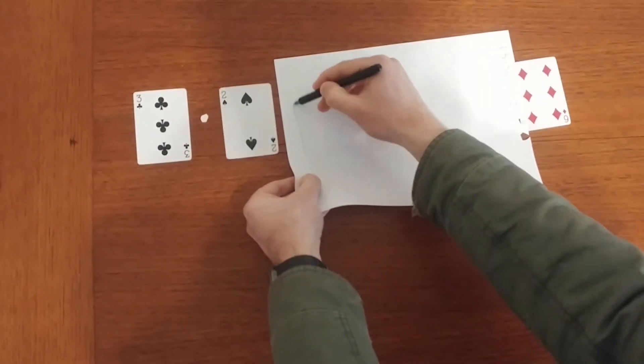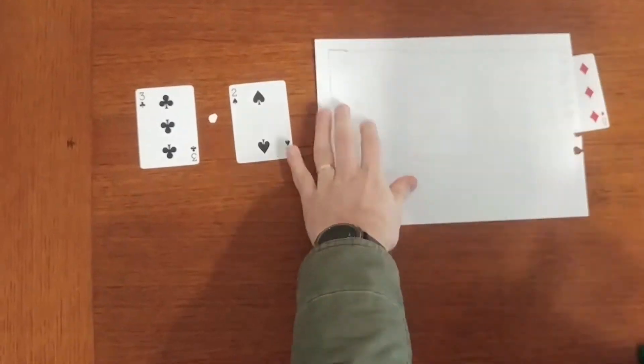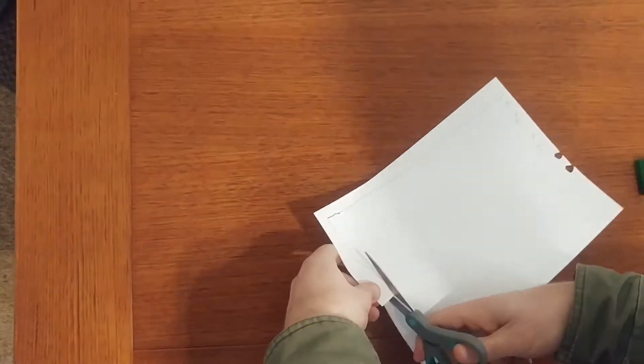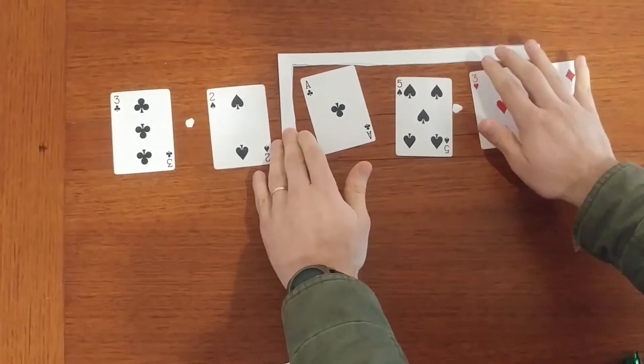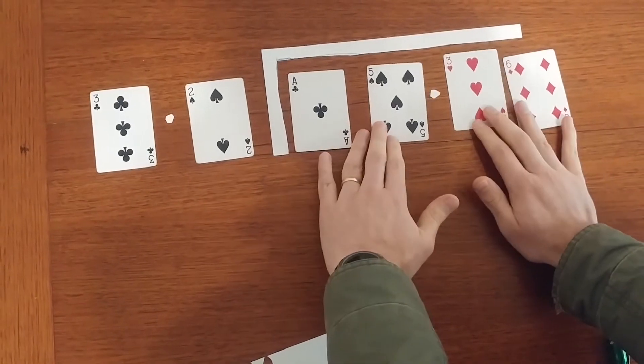So we're going to just put in the division line here that we normally use when we're working it out. I've done it with a straight line here just because it was a bit easier for me to cut it that way. So you can see it's visually looking like we're about to do working out.